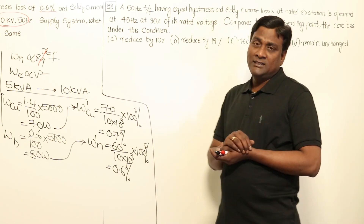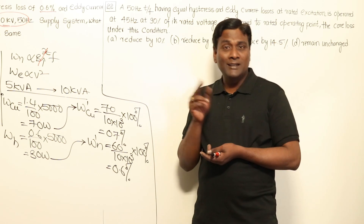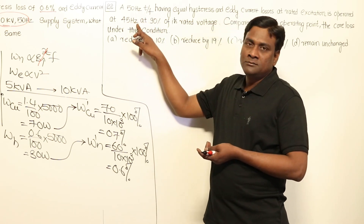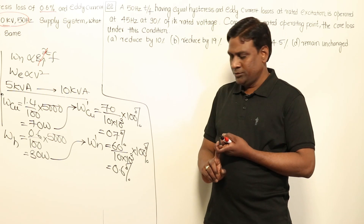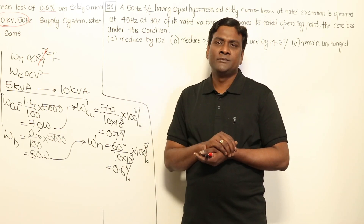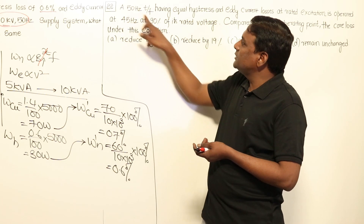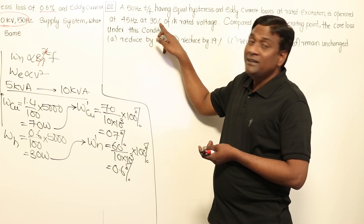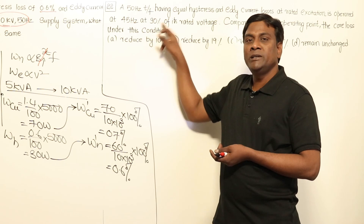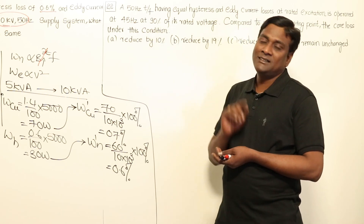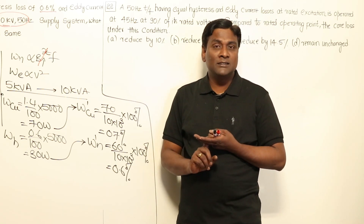So Bmax is constant. Hysteresis loss is directly proportional to Bmax^X × F; since Bmax is constant, it is directly proportional to frequency. Frequency is reduced by 10%, so hysteresis losses reduce by 10%. Eddy current losses are independent of frequency — only dependent on voltage. Voltage is reduced to 90%, so eddy current loss is proportional to 0.9² = 0.81, meaning a 19% reduction in eddy current loss.